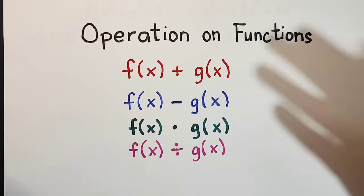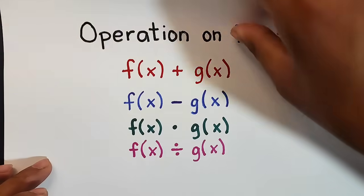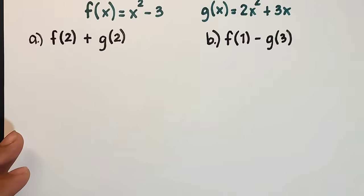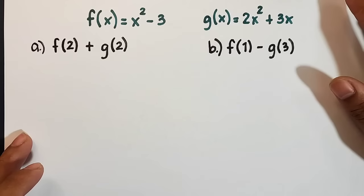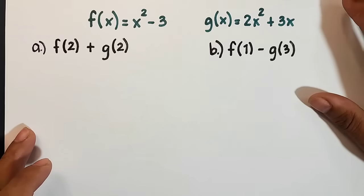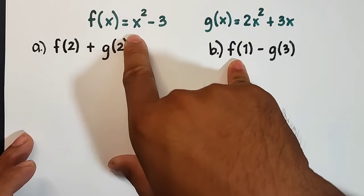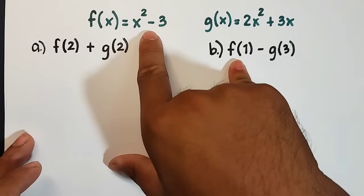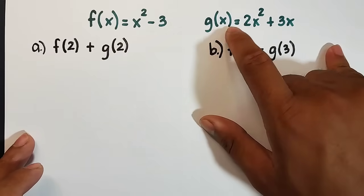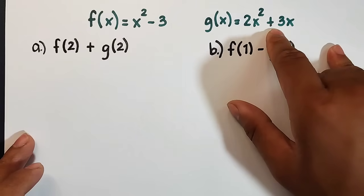So without further ado, let's do this topic. Let us have this example. So what we have here are two given functions, f(x) and g(x), where f(x) = x² - 3, while g(x) = 2x² + 3x.